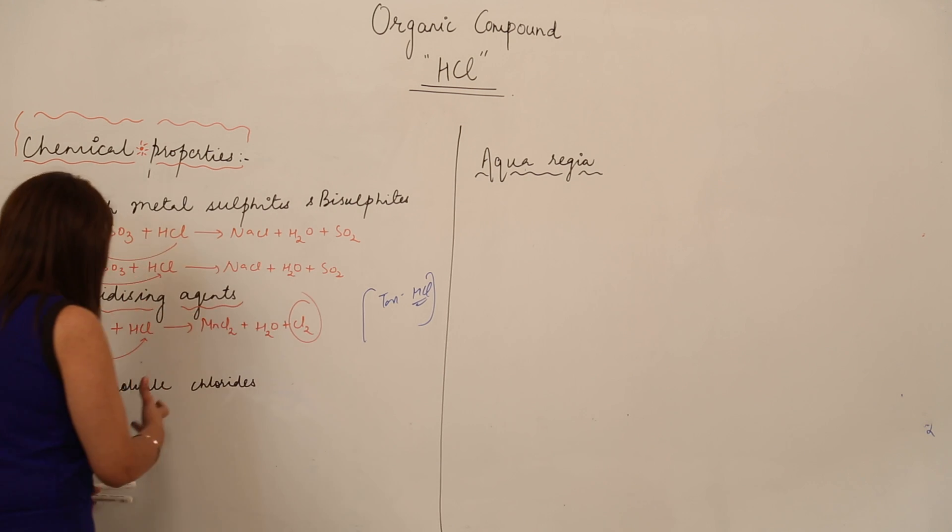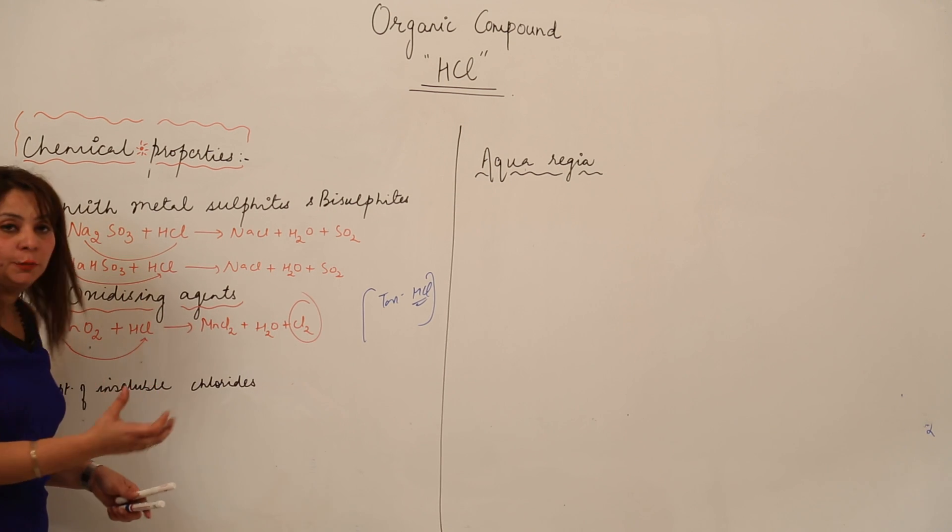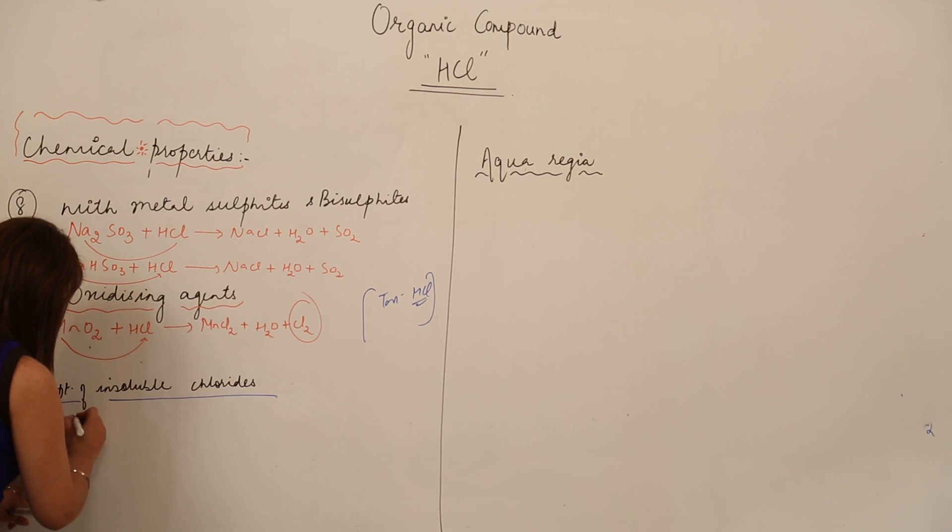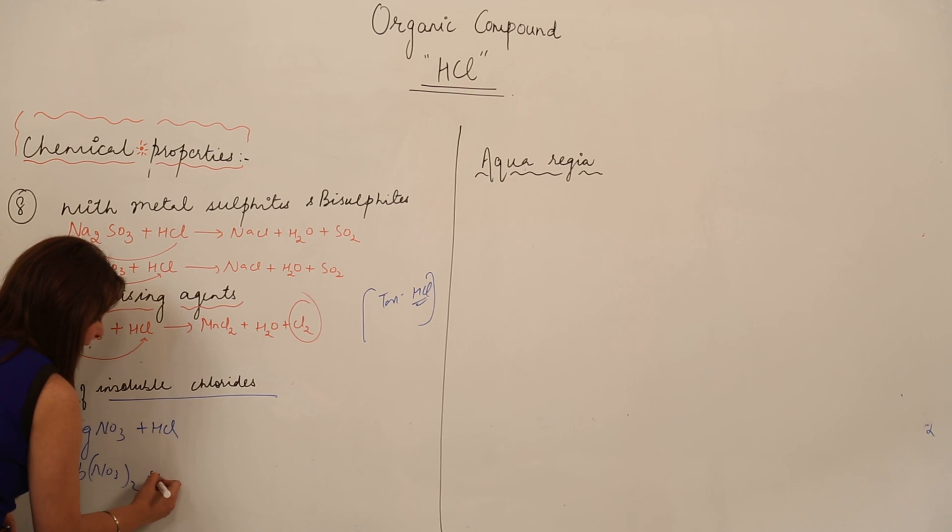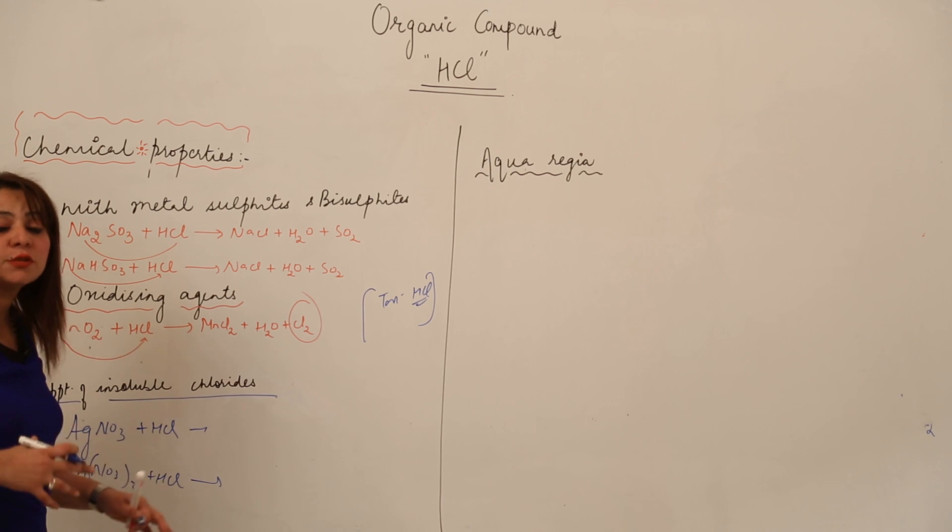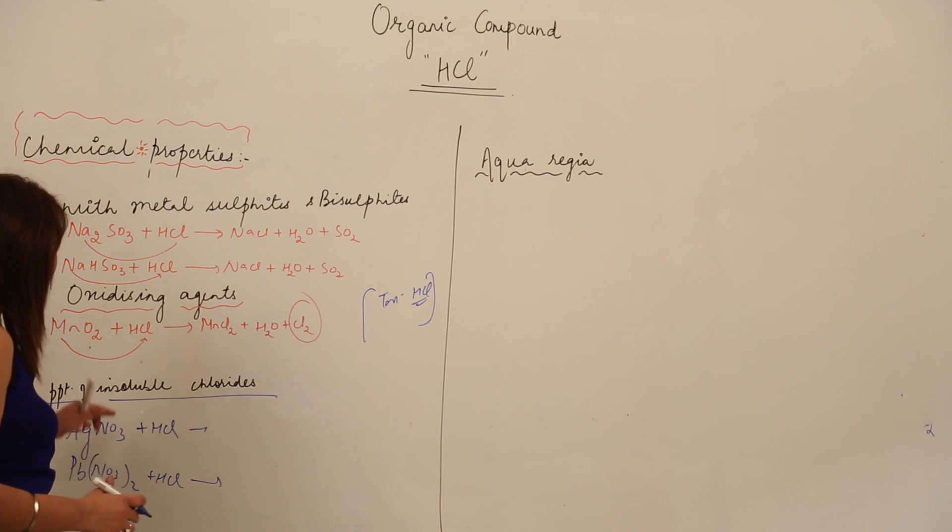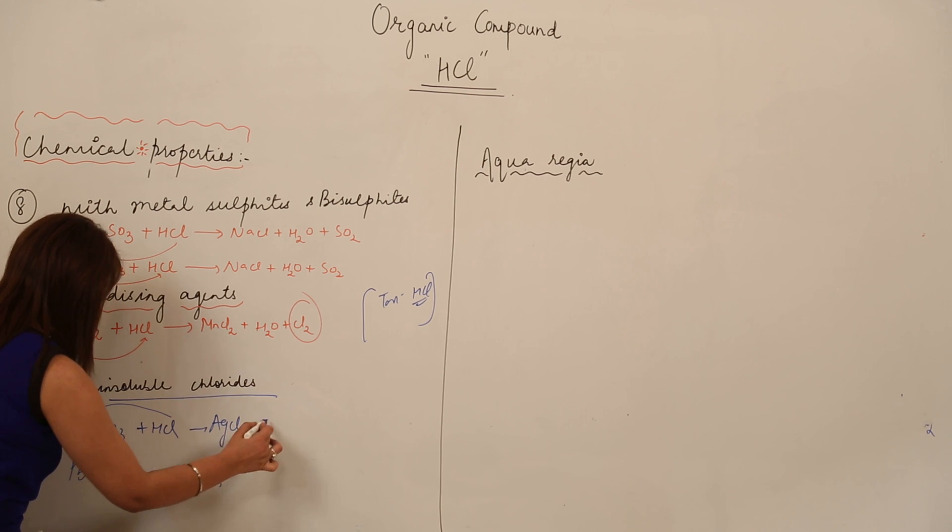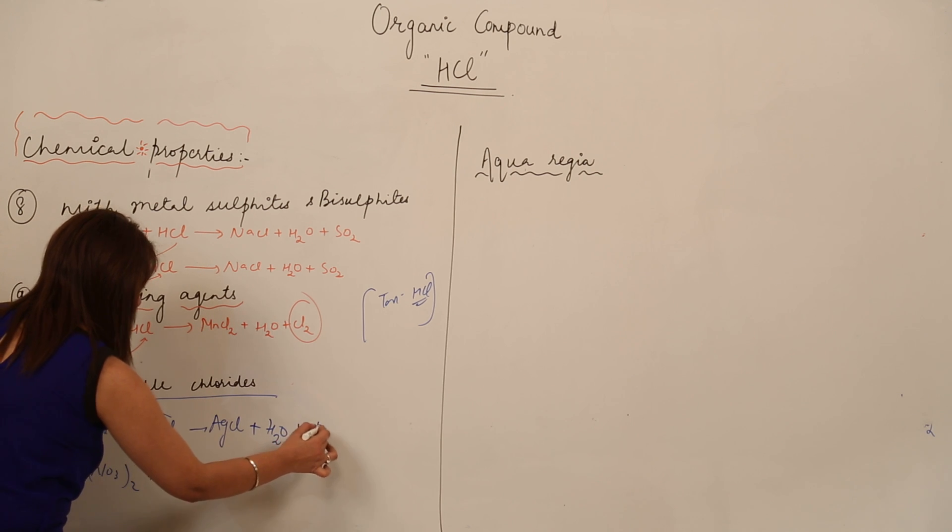Likewise, we can form precipitates of insoluble chlorides. This is an important property. When we react with AgNO3 (silver nitrate) or lead nitrate, it's a double displacement reaction where they mutually exchange their ions. Obviously, Ag reacts with Cl, forming AgCl, H2O, and NO2.